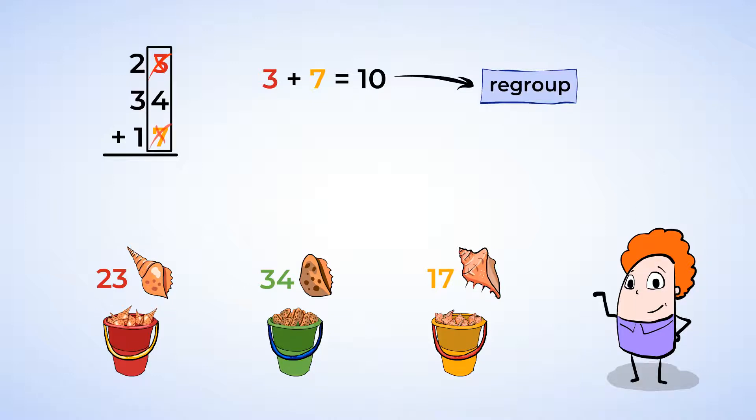We can cross out the 3 and the 7, and put a little 1 above the tens place, so we remember to add it later. Now that we have regrouped the 3 and the 7, we just have a 4 left in the ones place. You can write that in the ones place of our answer now. Great!